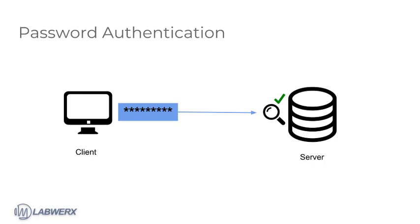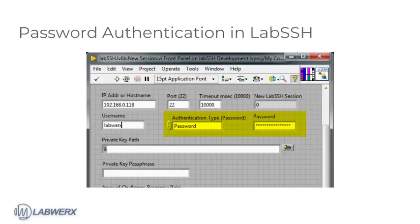First we'll discuss plain password authentication. This is just what it sounds like — you provide a password which the server checks against your user account. In LabSSH, you must select the password option in the authentication type choice control, and enter your password in the password control.